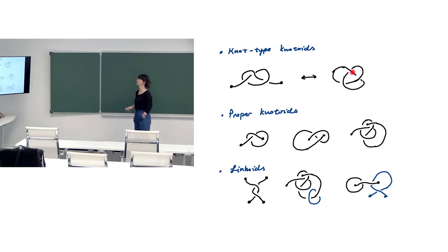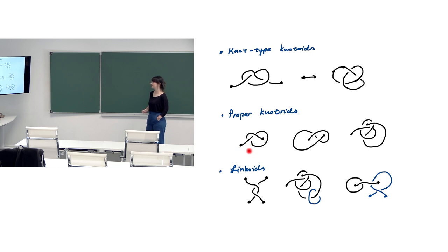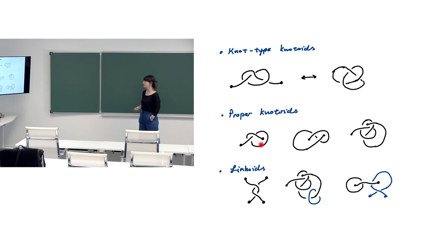The theory also includes diagrams with endpoints in different regions. There may be knotoids where, no matter which representation you look at, the endpoints cannot be brought to the same region by Reidemeister moves. This is one example of a proper knotoid. We will know this by using invariants of knotoids — no matter what deformation you make, you cannot bring the endpoints into the same region.